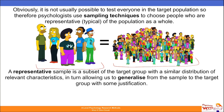A representative sample is a subset of the target group with a similar distribution of relevant characteristics, in turn allowing us to generalize from the sample to the target group with some justification. So if you include a small sample of the population in your study, because they are representative, you can generalize your findings back to the population.